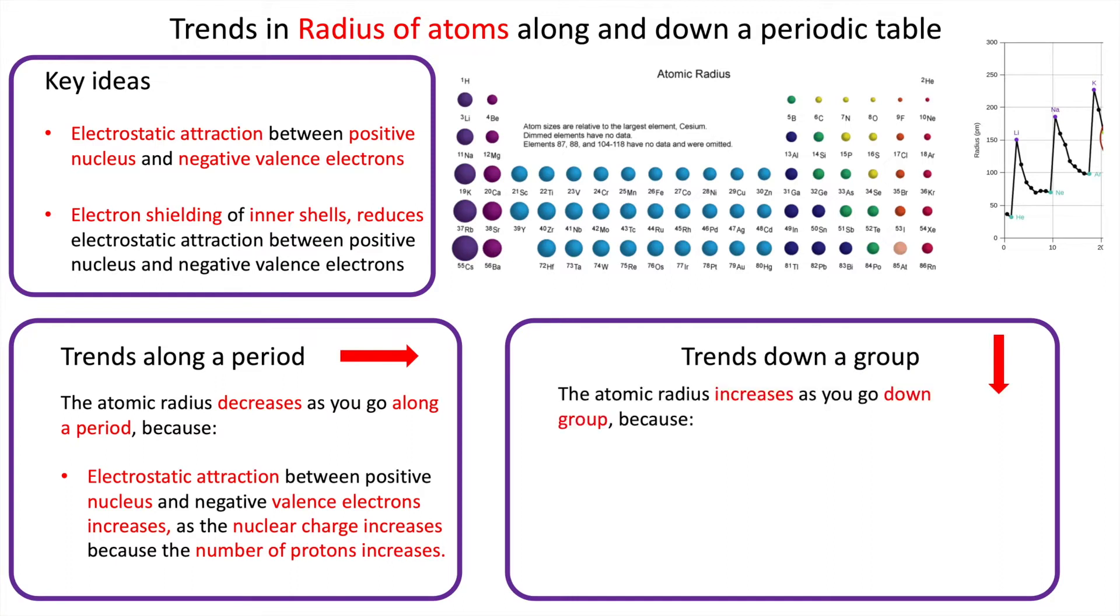So trends going down the group. Firstly, of course, you can see that the atomic radius increases as you go down the group because of two reasons. The first one is, of course, each time you go down a period then you get an extra shell, so the radius is increasing because electron shells increase.